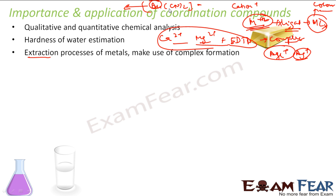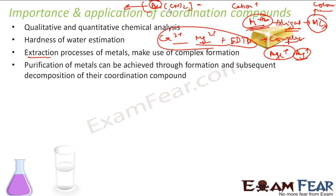Forming complex compounds is an intermediate step in the extraction process. Not only in extraction but also in purification — once you extract the metal, you do the purification. In the purification process for nickel, we form a complex called Ni(CO)₄, where CO (carbonyl) is the ligand. This complex is then decomposed to form pure nickel.